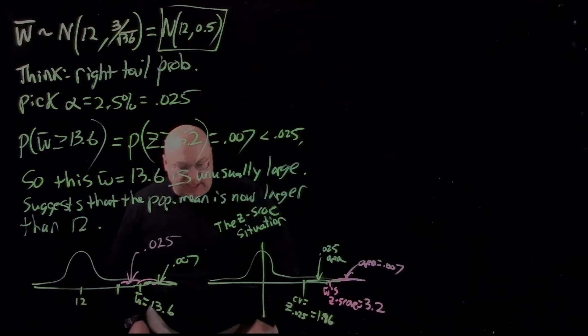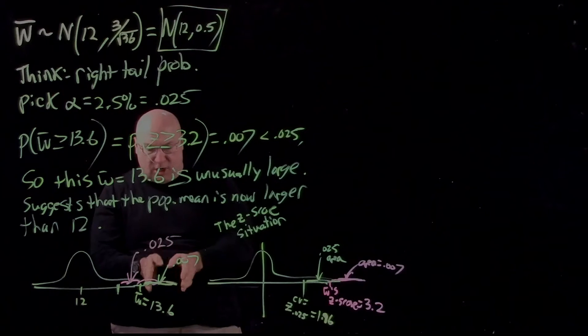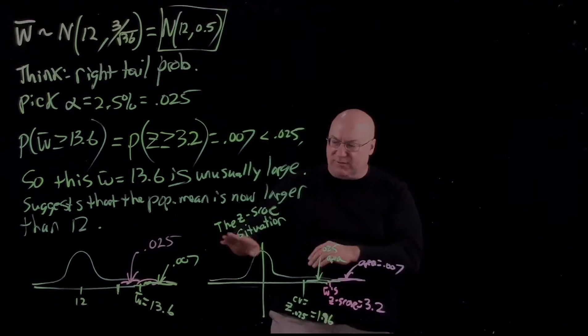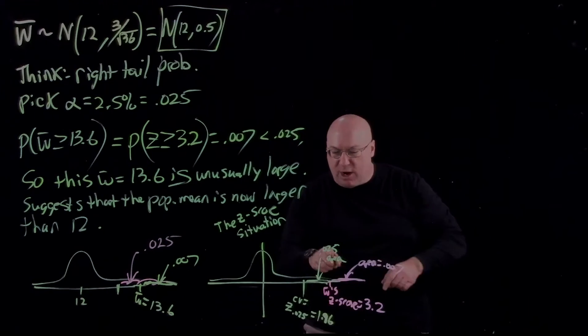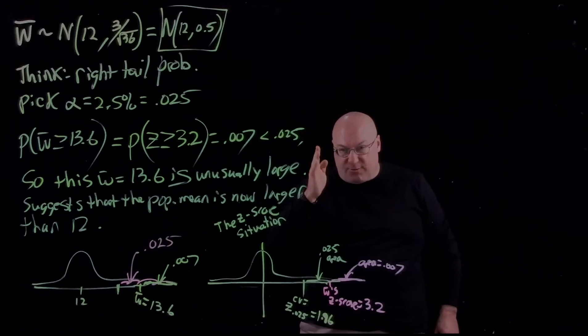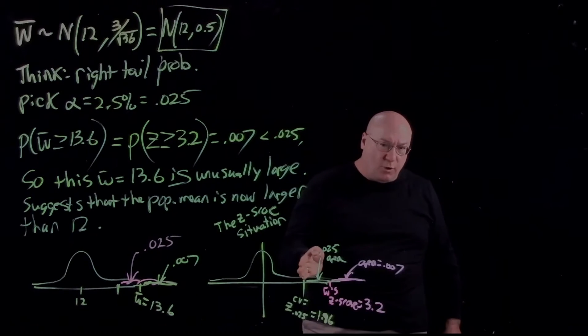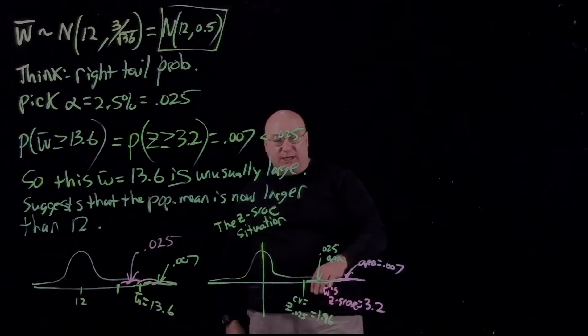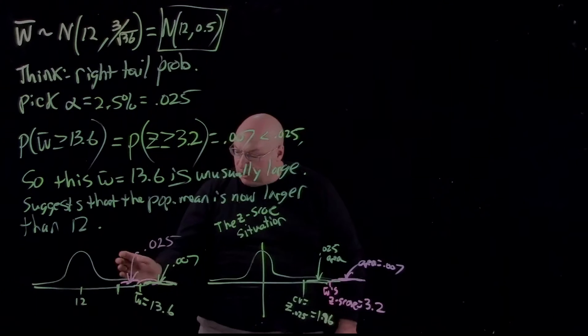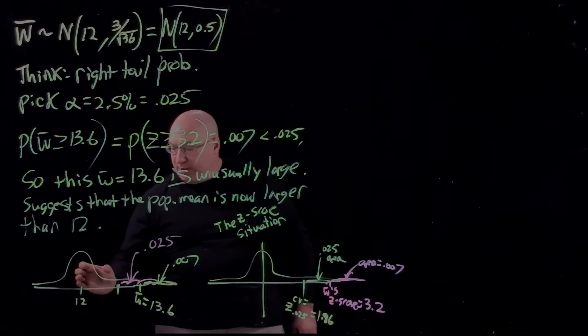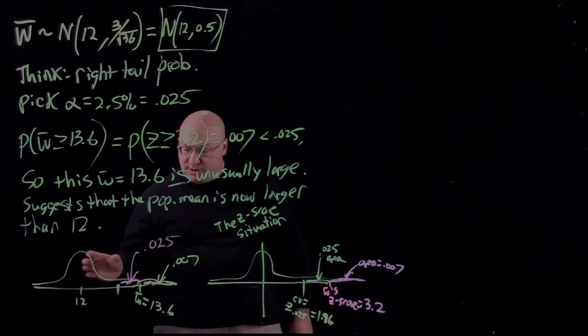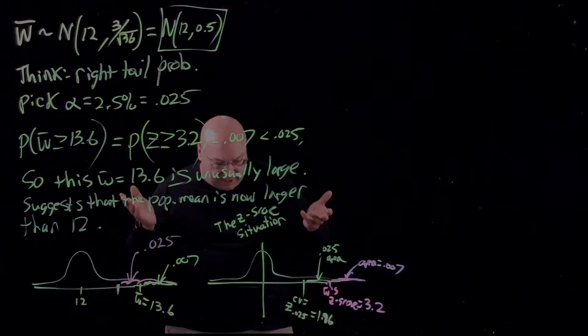So I can look at this two ways. I can say the area associated with my W bar is smaller than the cutoff area. But I can also say the Z-score for W bar is larger than the Z-score for my critical value, my cutoff critical Z-score for unusualness. So I conclude it's so unusual that probably this mean should be shifted over some. I don't know how much to shift it over, but it should be shifted over some, because I got such a low probability for this W bar.